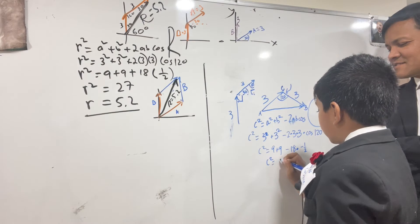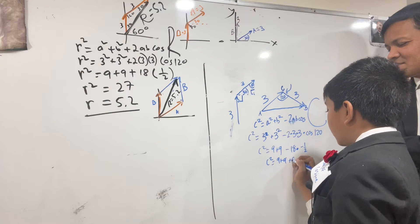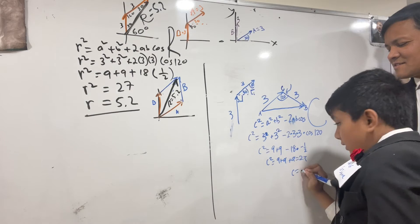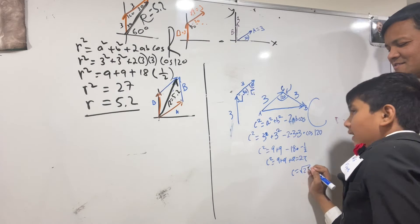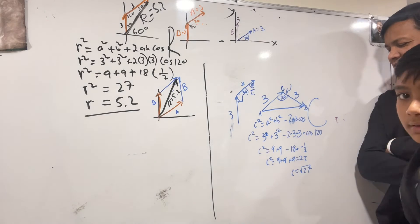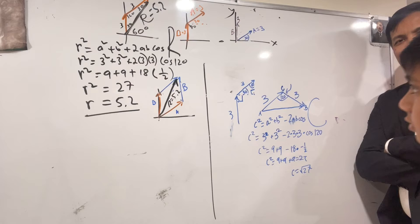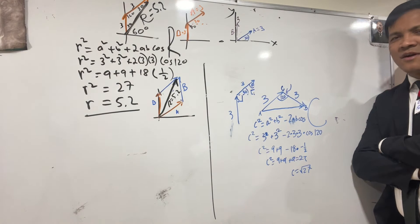So we get C squared equals 9 plus 9 plus 9, which is 27. It gives us the same thing — that's 5.2. Excellent. Now, the law of parallelogram and the law of cosines will show us that they are basically the same thing.